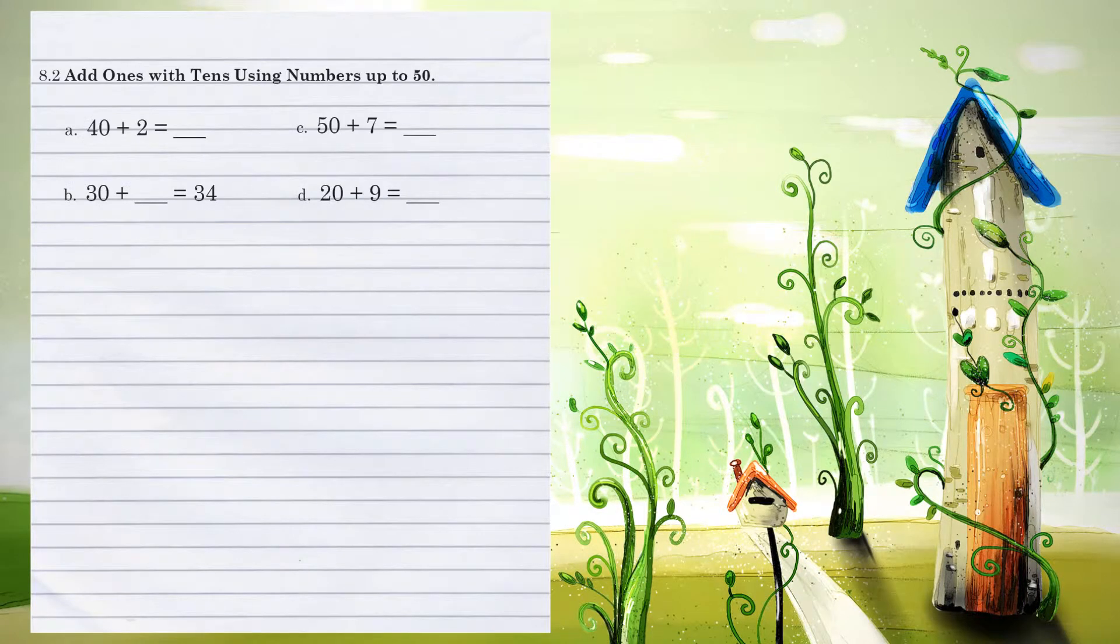Unit 8.2, adding 1s with 10s using numbers up to 50. Example A, 40 plus 2. We're looking at combining the 2 1s positions, which is 0 plus 2. That's 2. Then we carry over what's in the 10s position, which is just a 4, for an answer of 42.